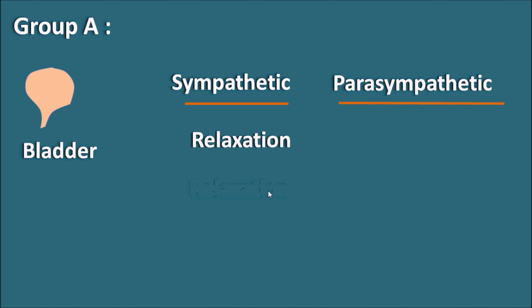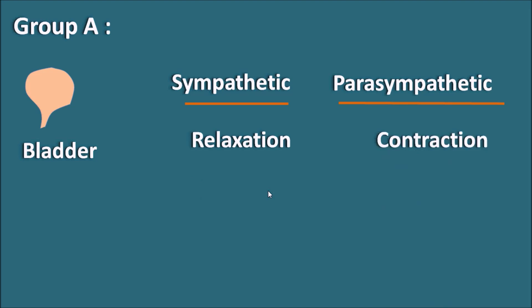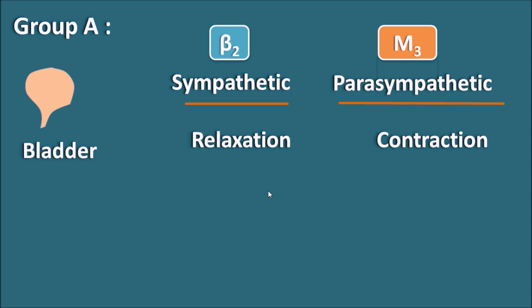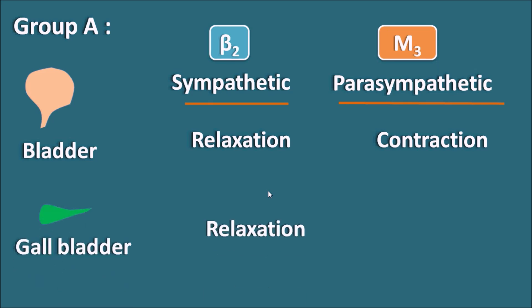The next organ is the bladder. At the bladder, the sympathetic system can produce relaxation whereas the parasympathetic system can produce contraction. The action of the sympathetic system is mediated by beta 2 receptors and the action of the parasympathetic system is mediated by M3 receptors. Another organ is the gallbladder, where again the sympathetic system produces relaxation and the parasympathetic system produces contraction.